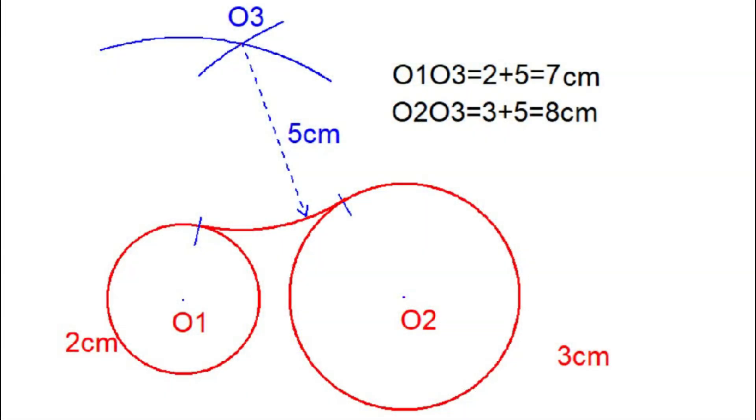In this video, I am going to explain how to draw an external tangent arc to two given circles. Let's understand it through this example. Here we are going to draw a 5cm tangent arc to a 2cm circle and a 3cm circle.